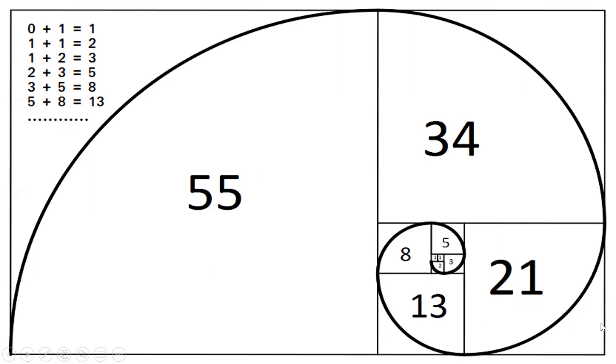13 plus 8 is 21. 21 plus 13, this bigger one is 34. The bigger one is 55. How do you get 55? 34 plus 21.